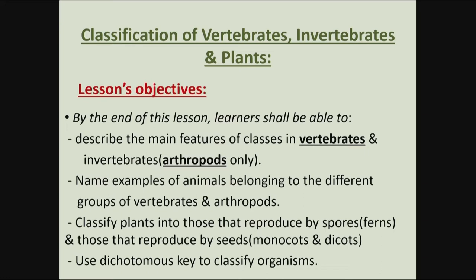It's important to know that we're going to be looking at arthropods only for invertebrates. We'll also be able to classify plants into those that reproduce using spores and those that reproduce using seeds or flowering plants, and we'll look at how to use the dichotomous key to classify living organisms.